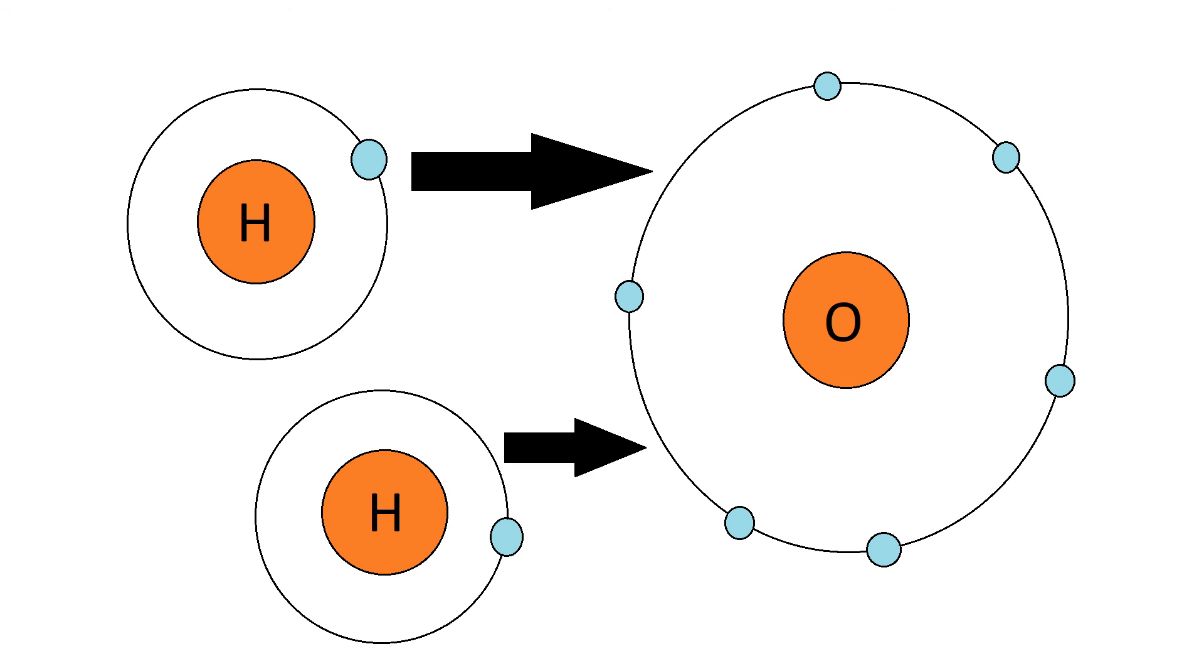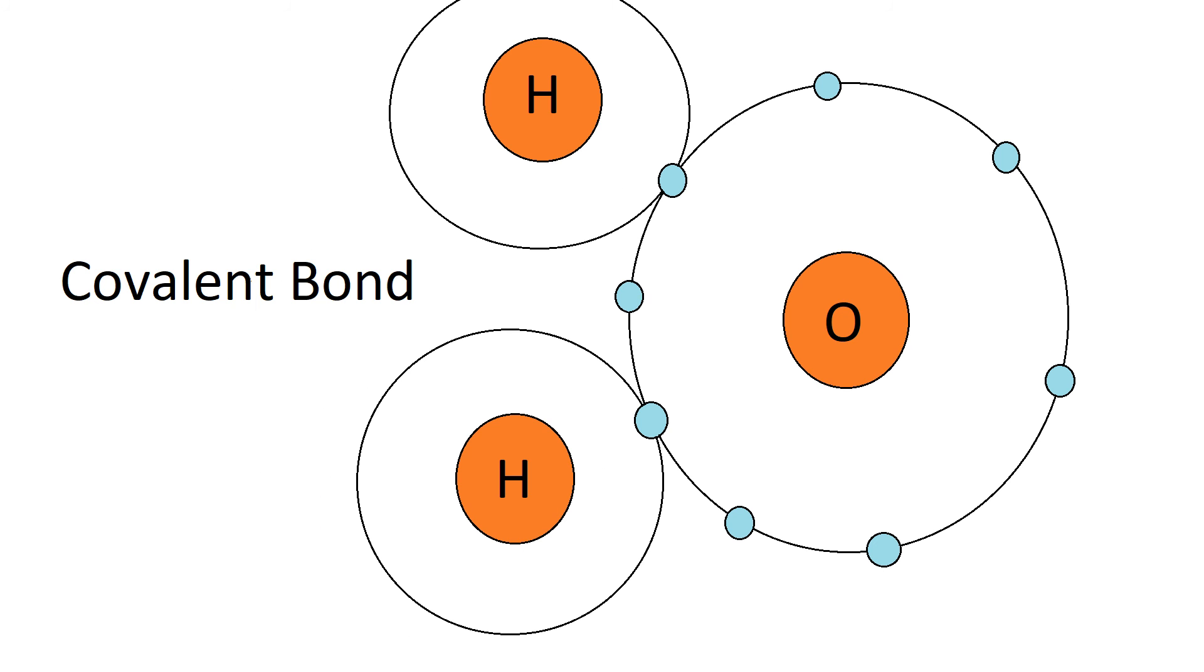Here's an example of a covalent bond. Again, like I said about the rule of eight, you have oxygen. It has six valence electrons and just needs two more. Hydrogen has only one yet it only needs one more for each hydrogen atom. So what happens, they both share the electrons and they now have a complete structure or complete shell around every single atom.